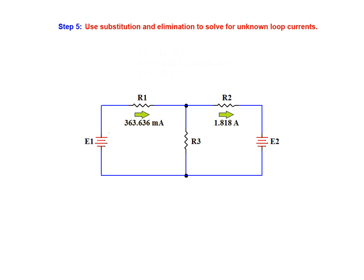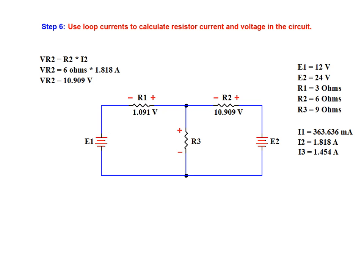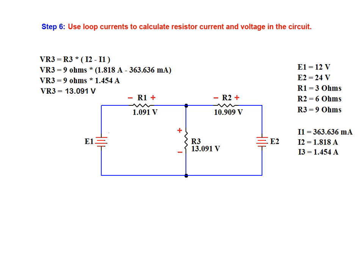Having determined the values of I1 and I2, it is easy to calculate the value of IR3 and move on to the final step. Because the loop 2 and loop 1 currents through resistor R3 flow in opposite directions and the loop 2 current is larger, the net resulting current IR3 flows in the same direction as loop current I2. With all three resistor currents known, we apply Ohm's Law to calculate the voltage drop across each resistor. The voltage drop across R1 is 1.091 volts, R2 is dropping 10.909 volts, and the voltage drop across R3 is 13.091 volts.